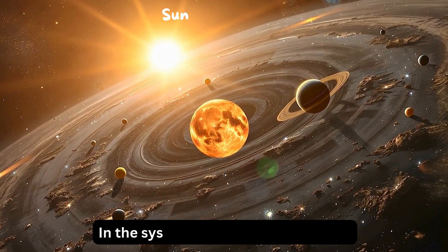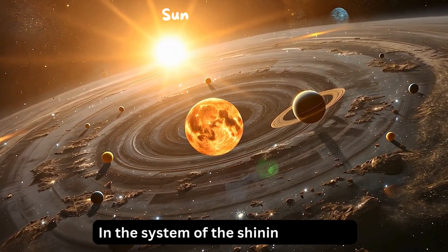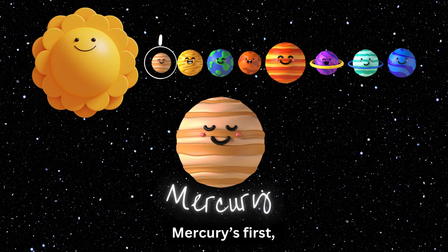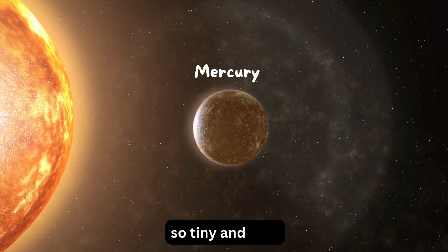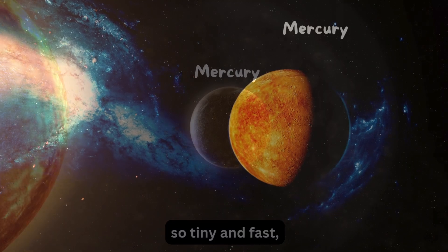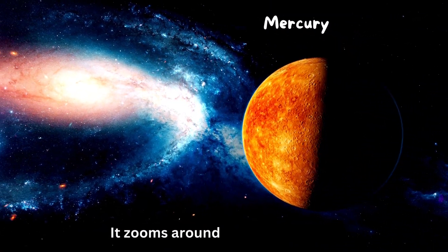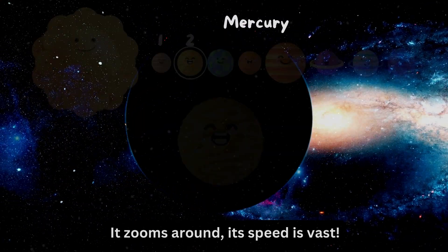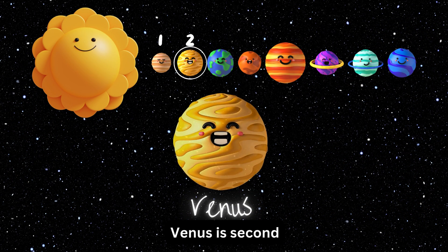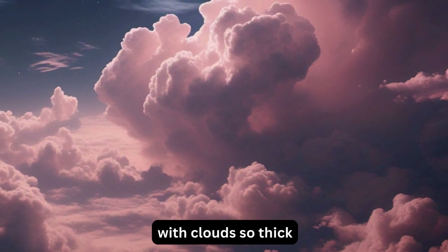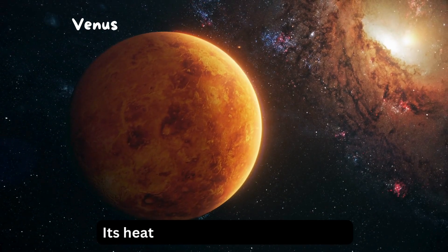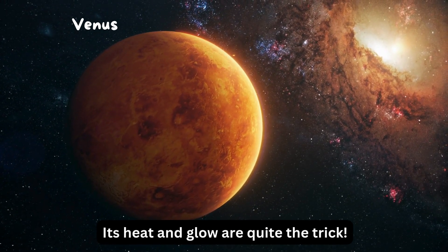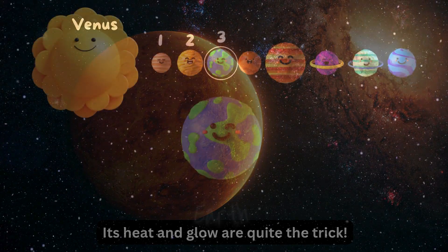In the system of the shining sun, Mercury's first, so tiny and fast. It zooms around, its speed is vast. Venus is second, with clouds so thick. Its heat and glow are quite the trick. Earth is third where life is found.